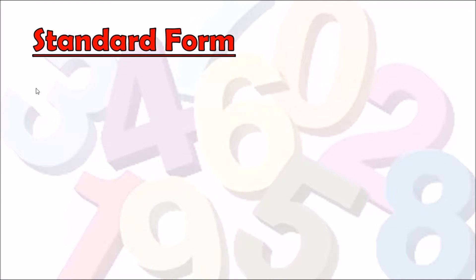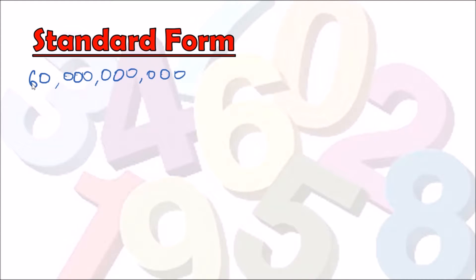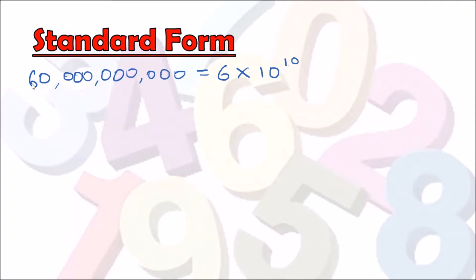For example, suppose you had to write 60 billion. There's a bunch of zeros — three groups of zeros — and you can't be writing it all out. Instead, we count the zeros: three, six, nine, ten. So we write 6 times 10 to the power of 10. The power of 10 here represents the number of places before the first digit.